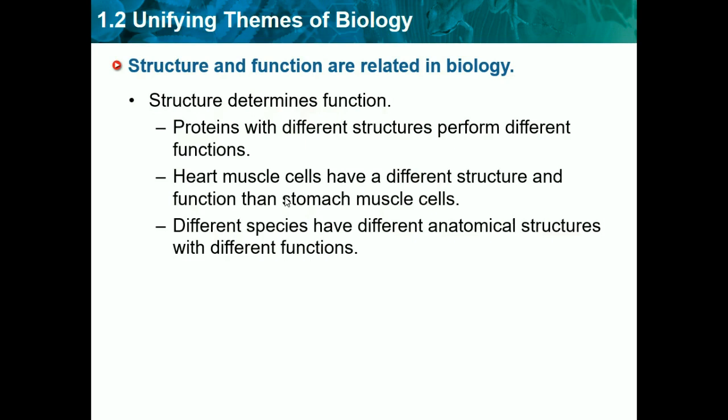Since they're different structures, they'll have different functions. We use our hands to grasp things, while bats use their wings to fly. Heart muscle cells obviously do something different than stomach muscle cells because they have different structures, same with proteins.